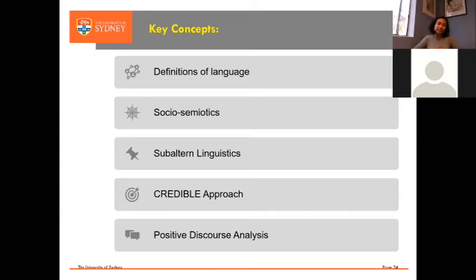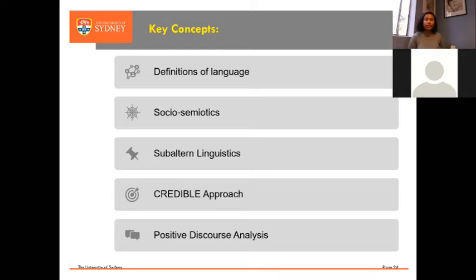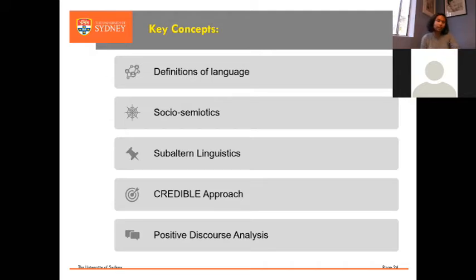Now let's talk about the key concepts highlighted in the discussions, in the videos, and in the papers. In the definitions of language, there are different approaches to studying language. In this particular course, we define language as a semiogenic system — as Amar discussed and will elaborate further. A semiogenic system means it's a meaning-making system. Because language is only one meaning-making system, it means there are also other meaning-making systems and other ways of making meanings in our world.